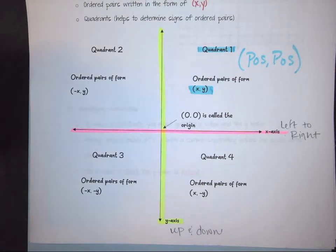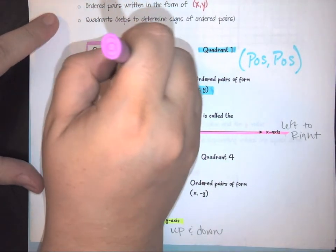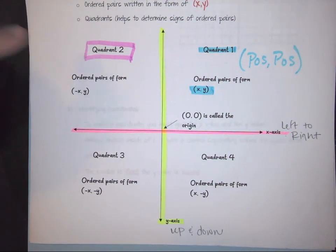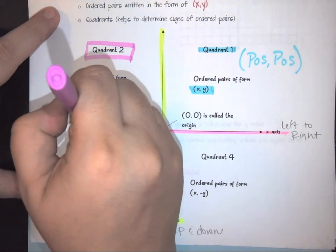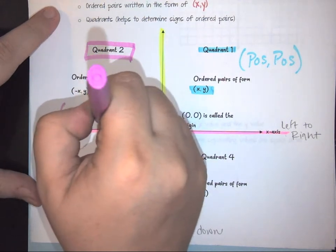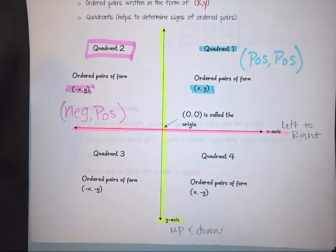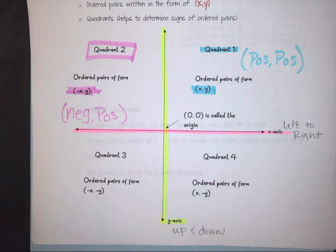Quadrant two would be this one here. In quadrant two we are looking at negative-positive, so its coordinate is labeled as (negative x, y). We're talking about your left-right movement and then your up-down movement.